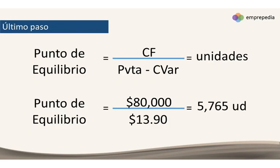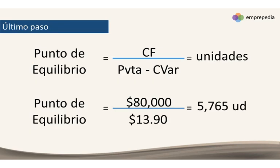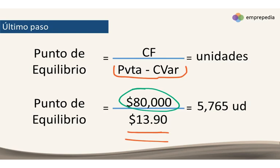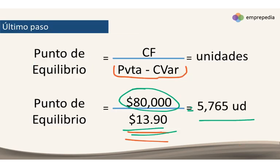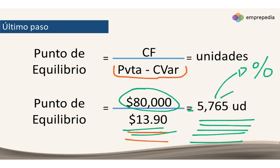Este margen de contribución ponderado regresa a la fórmula original de punto de equilibrio, donde este es el margen de contribución — ahora ponderado, porque son varios productos. Haciendo un supuesto: imaginemos que nuestros gastos fijos fueron de 80 mil. Lo dividimos entre este número obtenido de todo el proceso, y así tenemos el punto de equilibrio total de la empresa. Ya si quiero saber el punto de equilibrio de cada producto, ese número lo multiplico por cada uno de los porcentajes, y así tengo el punto de equilibrio de cada producto.